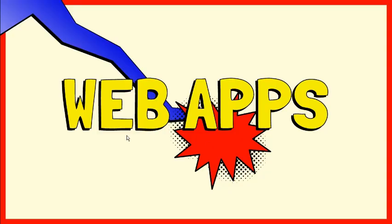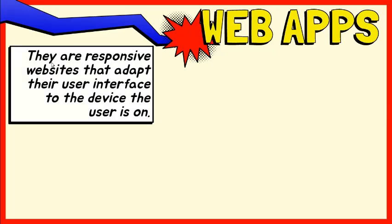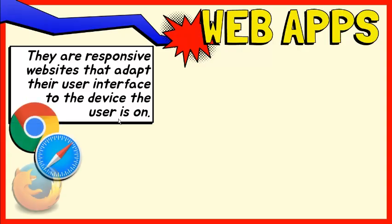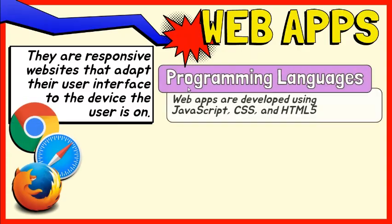Let's talk about the second mobile apps category called web apps. Web apps are accessed via a web browser on your mobile device. They are actually responsive websites that adapt their user interface to the device that the user is on. Web apps don't need to be downloaded as native apps do. They load in browsers like Chrome, Safari, or Firefox. They are developed using JavaScript, CSS, and HTML5.